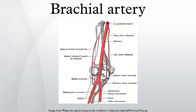The brachial artery is closely related to the median nerve. In proximal regions, the median nerve is immediately lateral to the brachial artery. Distally, the median nerve crosses to the medial side of the brachial artery and lies anterior to the elbow joint.